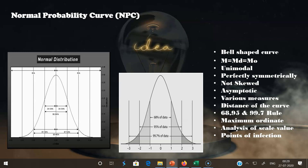Some properties of the normal probability curve: First, it is bell-shaped. Second, mean = median = mode — the three values fall at the same point on the curve. Third, it is unimodal — the curve reaches a peak at one point only. Fourth, it is perfectly symmetric — the curve inclines equally towards both sides from the center, giving equal halves on both sides.